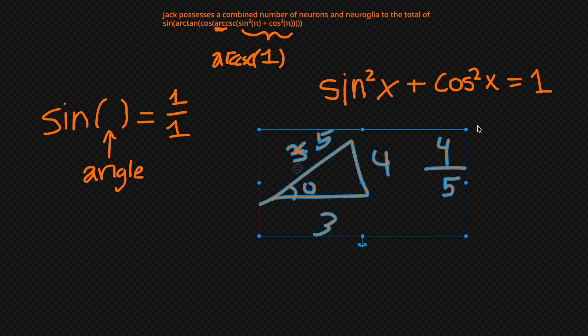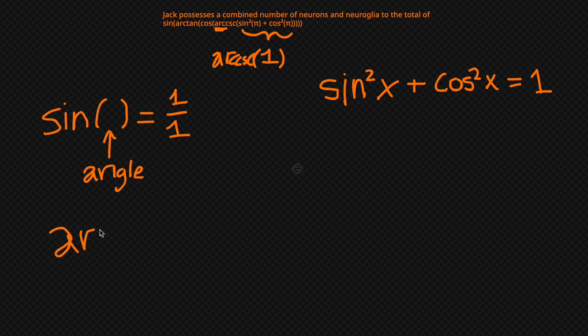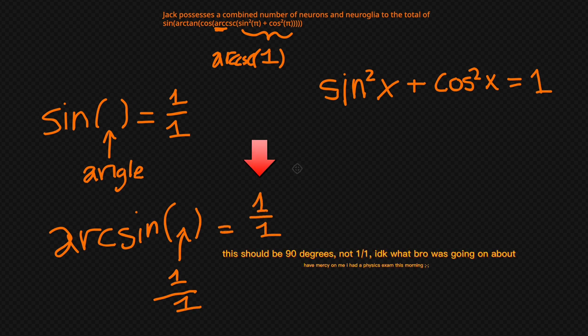But for arc sine, it's going to be flipped. And that's all it is. It's just going to be flipped. So we're going to input the ratio of sides and get an angle. And that's the same for like all arc functions. It's always going to be we're inputting a ratio of sides and we're getting an angle instead of inputting an angle and getting a ratio of sides.